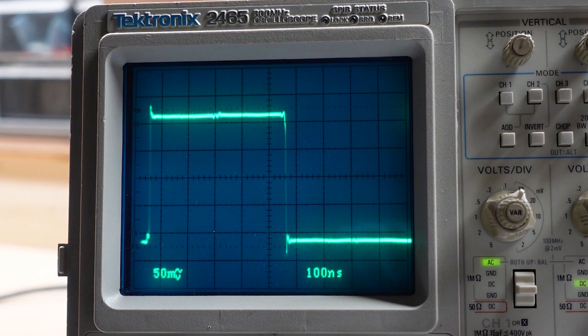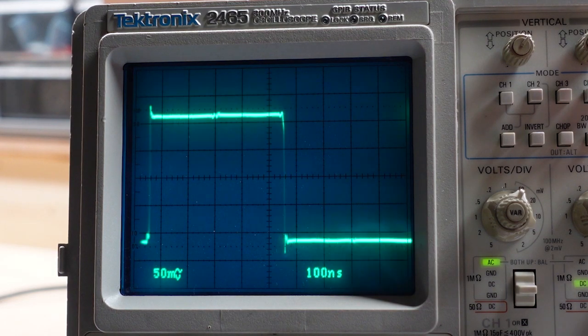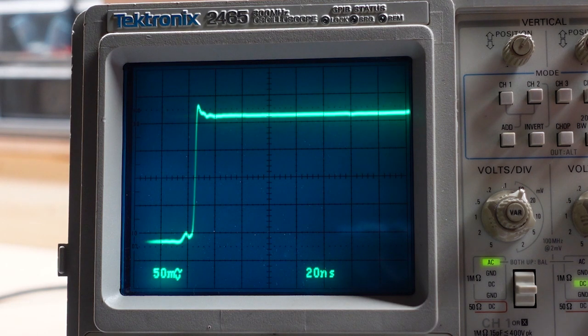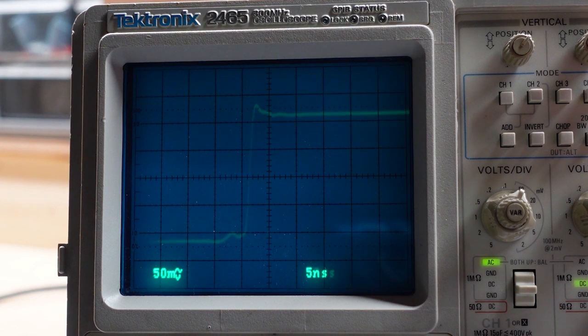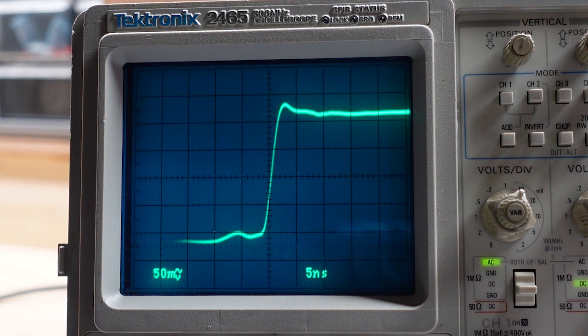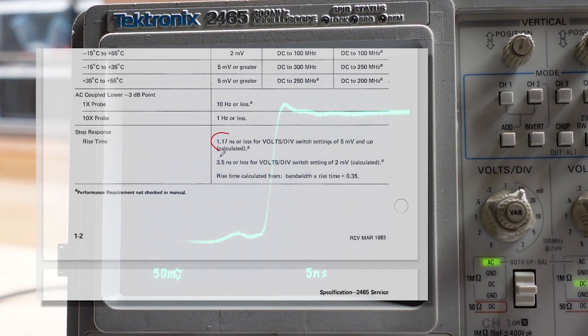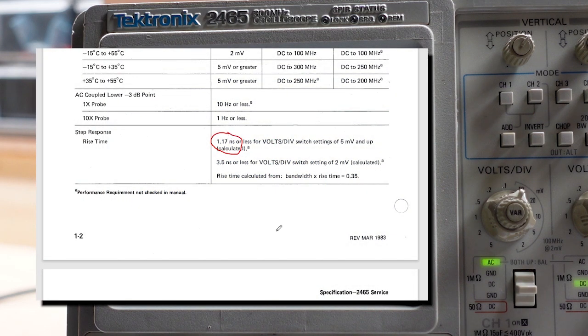Okay, I've set the 4505 to one microsecond and my 2465 to 100 nanoseconds per division. And we can see some of that ringing and overshoot at both ends of the pulse. And what I want to do now is zoom in even closer on that. 50 nanoseconds, 20 nanoseconds, 10 nanoseconds. We can really start to see it clearly now. One more step puts me at 5 nanoseconds. Now, I looked up the specs on my 2465 and it's specified at a 1.17 nanosecond rise time or less.